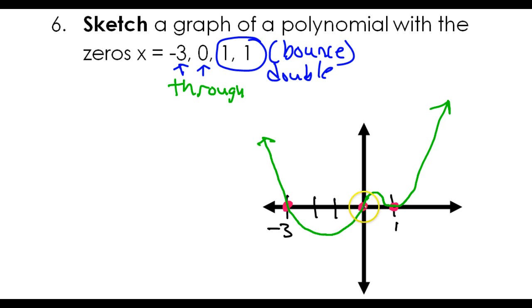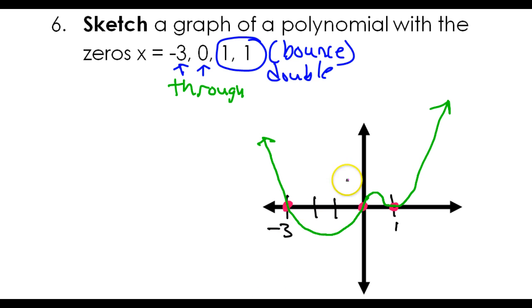So the graph looks something basically like that — through, through, and a bounce. I could have also flipped this whole thing upside down and gone through, through, bounce — and that would also be correct.